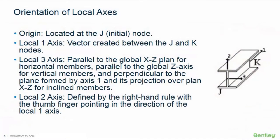Let's first discuss the orientation of the local axes of members in RAM Elements. By default, RAM Elements orients each member's local axis as follows: the origin will be located at the J end of the member, which is the initial node. The local one axis is a vector created between the J and K nodes. The local three axis is parallel to the global XZ plane for horizontal members, parallel to the global Z axis for vertical members, and perpendicular to the plane formed by axis one in its projection over the plan XZ for inclined members.